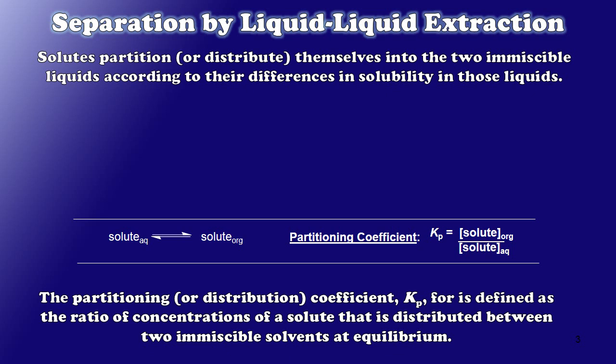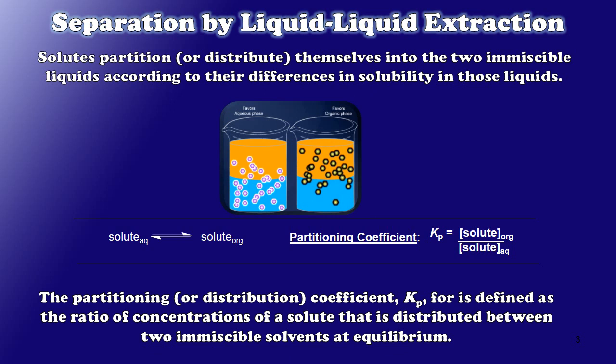We have a way of quantifying exactly how much of our compound partitions into one side of our two immiscible liquids or the other. It's called a partitioning coefficient. And the partitioning coefficient is essentially an equilibrium constant. And here I've defined it as an equilibrium where my solute dissolved in the aqueous layer was my starting material and my solute dissolved in the organic layer was my product, if you will. When this is true I get a partitioning coefficient, or an equilibrium constant, which looks like this: the concentration of the solute in the organic layer divided by its concentration in the aqueous layer.